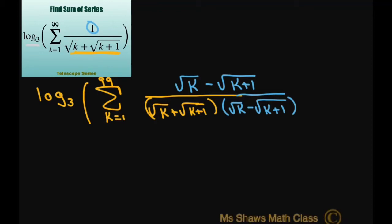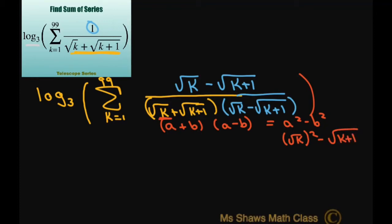Now our denominator is in the form of (a + b)(a − b), which equals a squared minus b squared. So you get square root of k squared minus square root of k plus 1 squared, which gives you k minus (k plus 1). The denominator is negative 1. Distributing the negative — the k's cancel — and looking at the numerator, that means I have negative 1 times (square root of k minus square root of k plus 1).